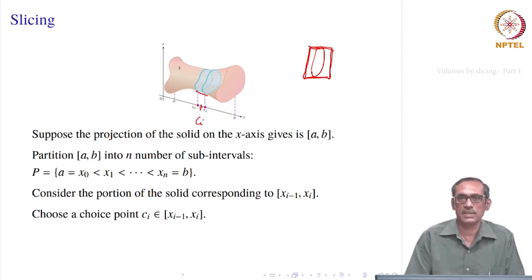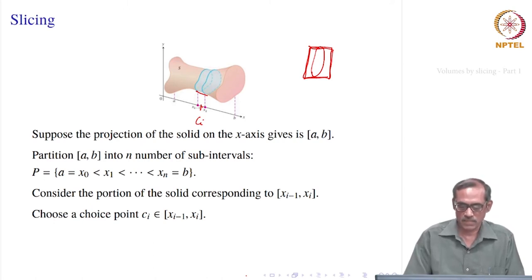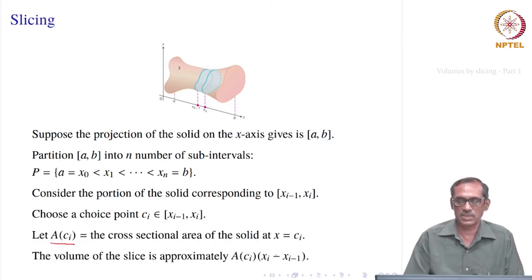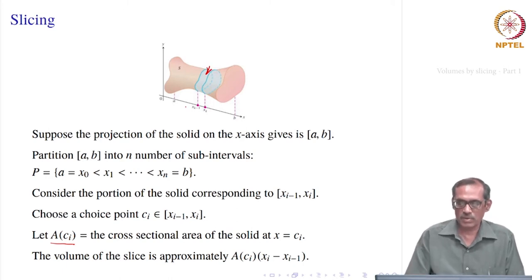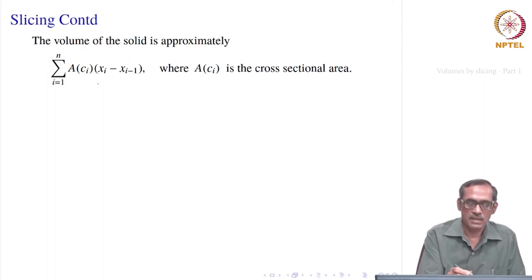We choose a point c_i inside the sub-interval x_{i-1} to x_i. These c_i's comprise a choice set, similar to when we introduced integrals for area below the curve f(x) and the x-axis. But now instead of f at c_i, we are taking the area at c_i — the cross-sectional area A(c_i) of the solid at x equal to c_i. The volume of the slice is approximated by A(c_i) times x_i minus x_{i-1}. Then we form the Riemann sum: the volume is approximately the summation from i=1 to n of A(c_i) times (x_i minus x_{i-1}).